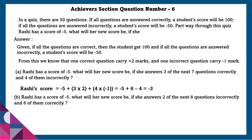Part B: Rashi had a score of minus 5. She answers 2 of the next 8 questions incorrectly and 6 correctly. Rashi's score will be minus 5 plus 2 times minus 1 (for 2 incorrect) plus 6 times 2 (for 6 correct), which equals 5.